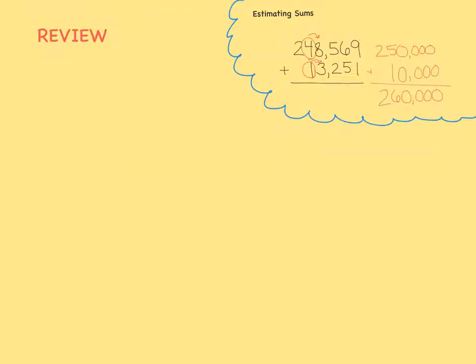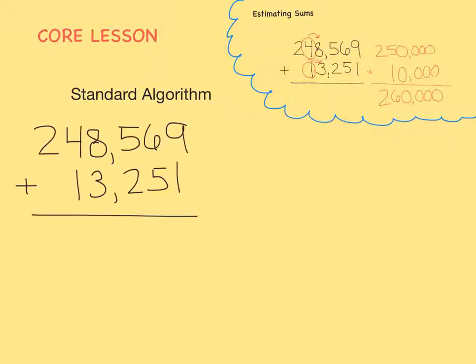We know the answer to this problem should be about 260,000. The most efficient way to find the actual answer to this problem is to use standard algorithm. We start by lining both numbers up on top of each other. Notice that the ones are with the ones, tens with the tens, hundreds with the hundreds, and so on.